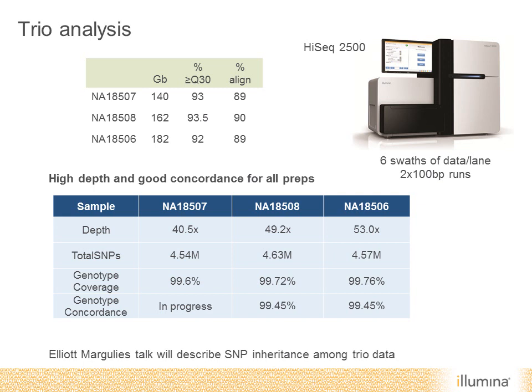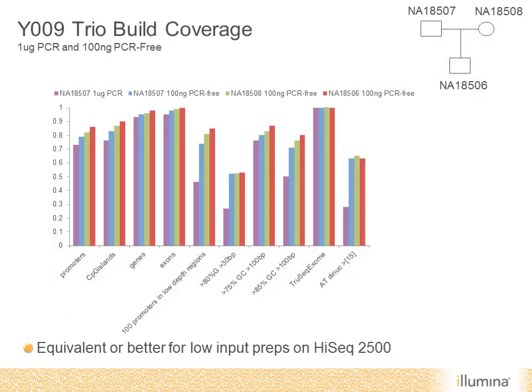Coverage and concordance across genotypes are very good, as expected. Comparing these very low-input DNA preps using our PCR-free method to a standard prep using one microgram of DNA with PCR, across a whole variety of different genomic features, we get equivalent or better coverage using the low-input prep and our HiSeq 2500.